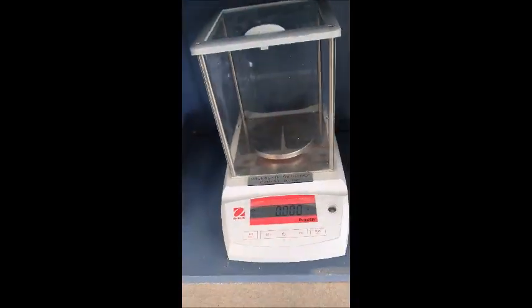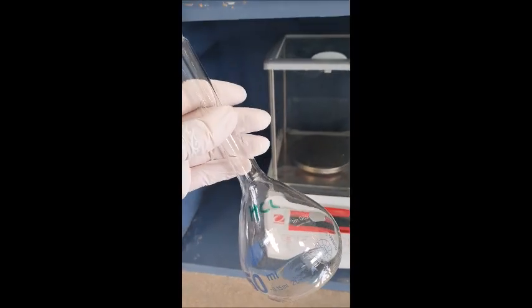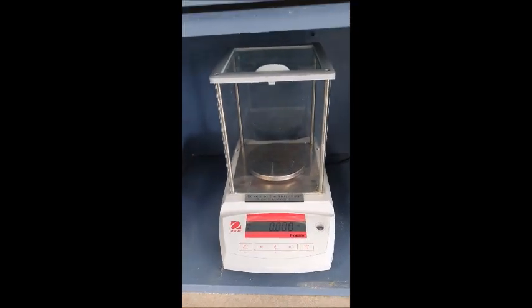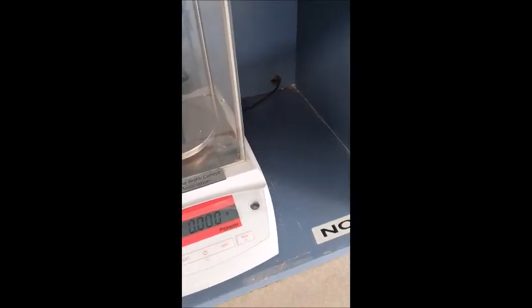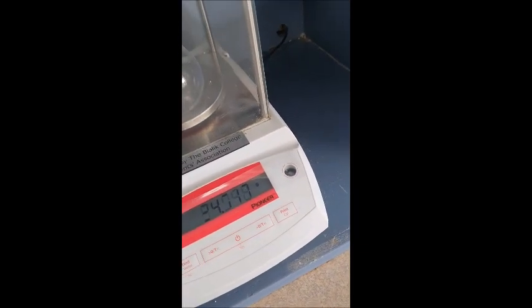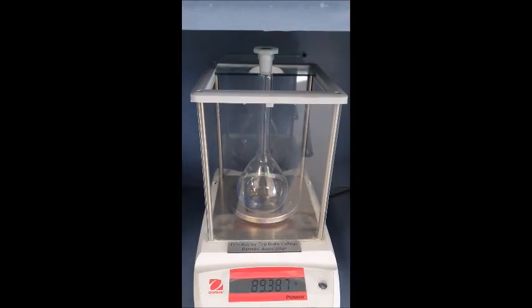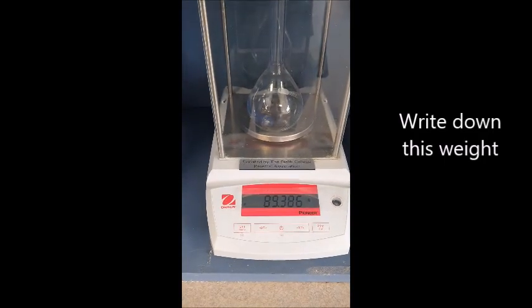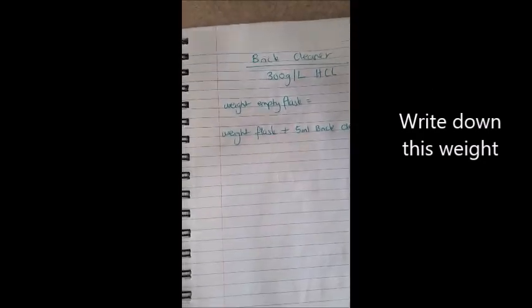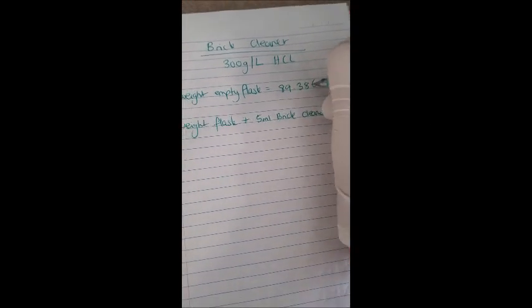Alright, so the first thing we need to do is we need to dilute that because it's very strong and you can't titrate with concentrated acid because it just fumes everywhere and it's unstable. So we're going to dilute it and to do that really accurately we need to first weigh the empty standard flask. That's 89.386 grams.